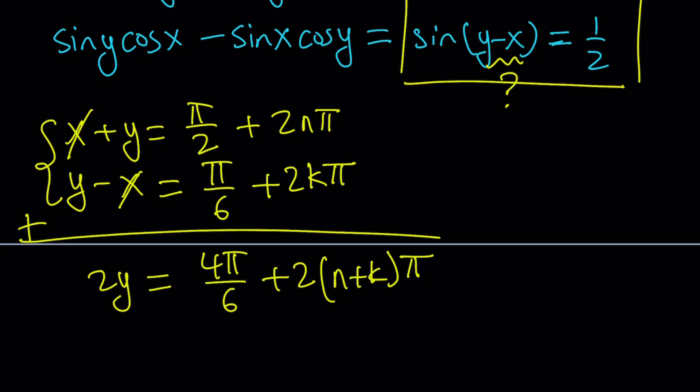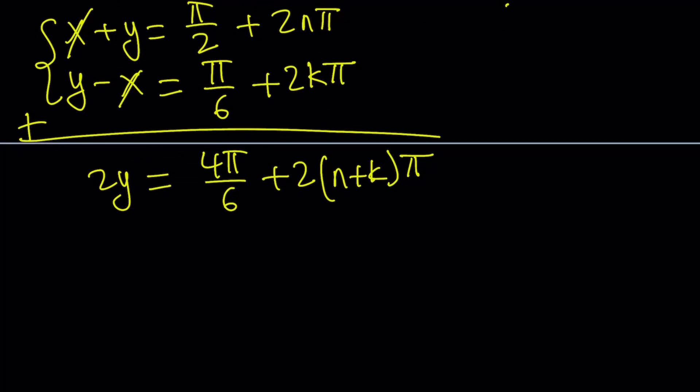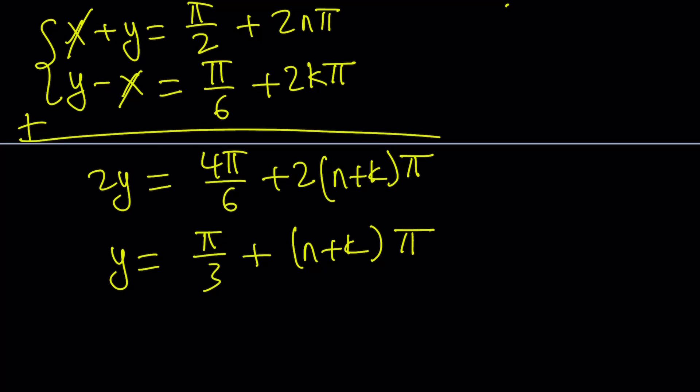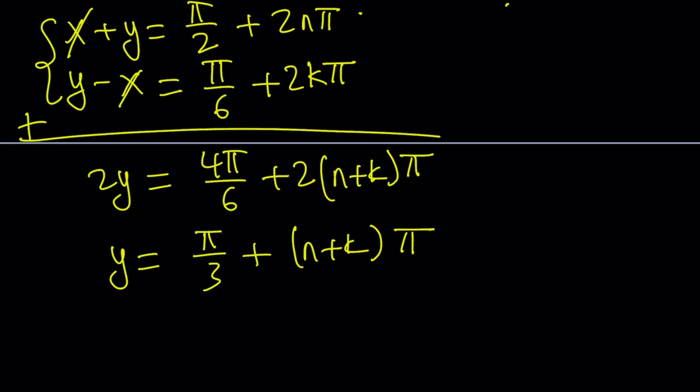And when we do the x, you're going to notice they're actually somewhat dependent. Anyways, 2 pi over 3, and then if you divide both sides by 2, you're going to get pi over 3. And that is going to be plus n plus k times pi. So that gave us the y value.